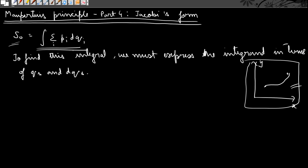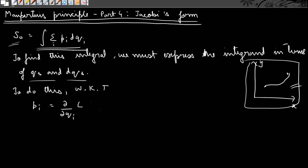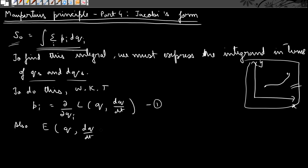This will become more clear when we take an example later in this video. To find this integral it becomes easier when we express the integrand in terms of q's and dq's. To do this, we know that pᵢ is defined as ∂L/∂q̇ᵢ, where the Lagrangian is a function of q and dq/dt — which is q dot — and is independent of time because we assume energy is conserved. Let me call this equation 1.